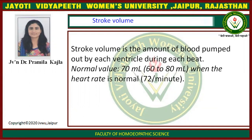So what is stroke volume? It is the amount of blood pumped out by each ventricle during each beat. The normal value of stroke volume is 70 ml when the heartbeat is normal, that is 72 per minute.